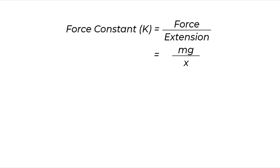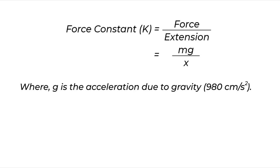So, force constant k equals force by extension, which equals mg by x, where g is the acceleration due to gravity, which is 980 cm per second squared.